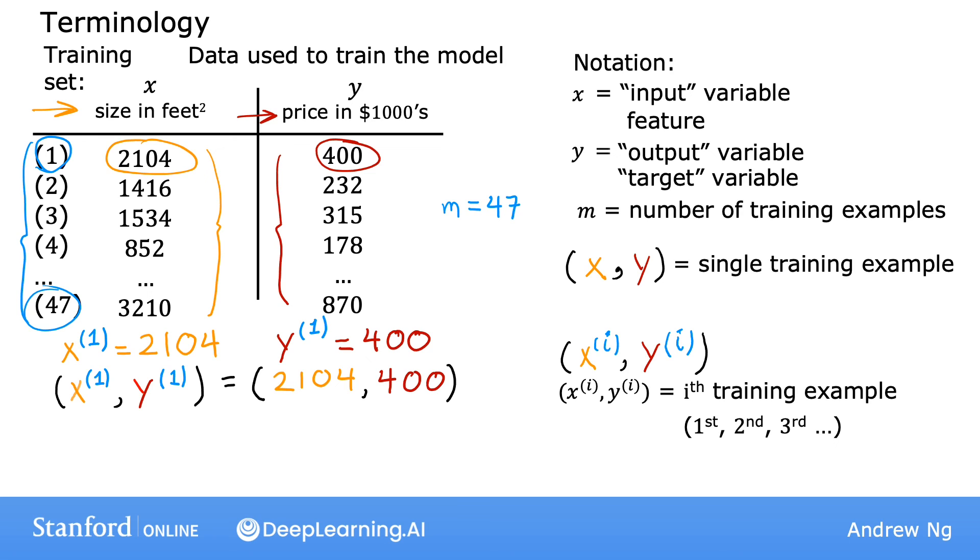Just a note, this superscript i in parentheses is not exponentiation. So when I write this, this is not x squared. This is not x to the power of 2. It just refers to the second training example. So this i is just an index in the training set and refers to row i in the table.